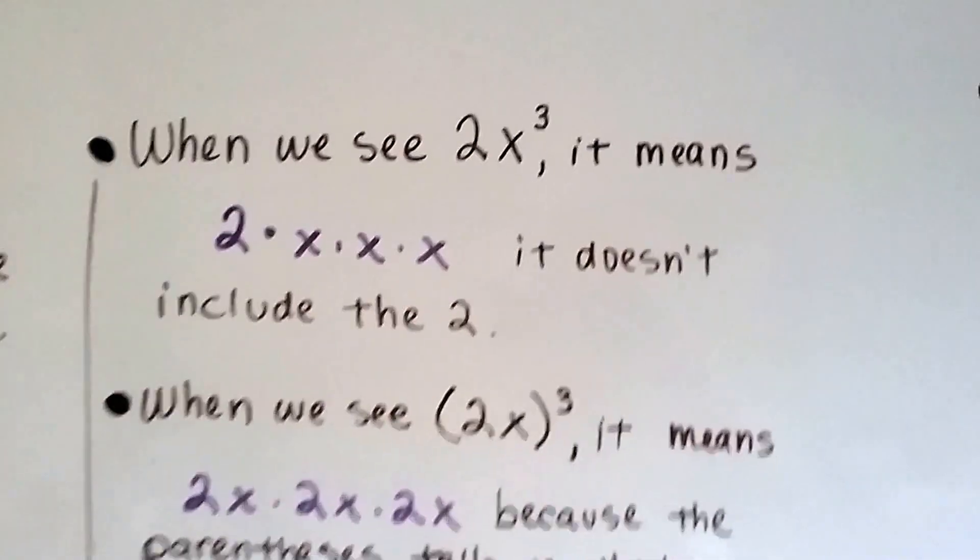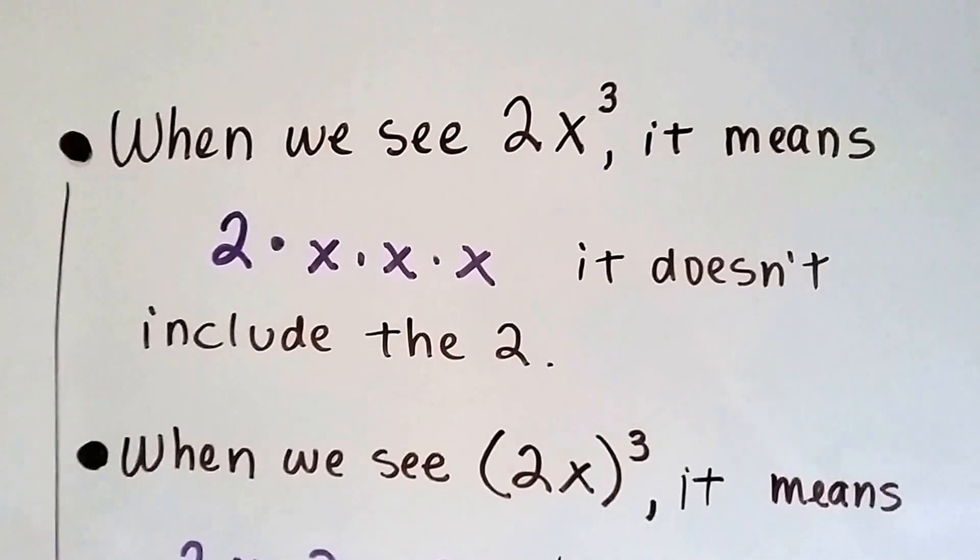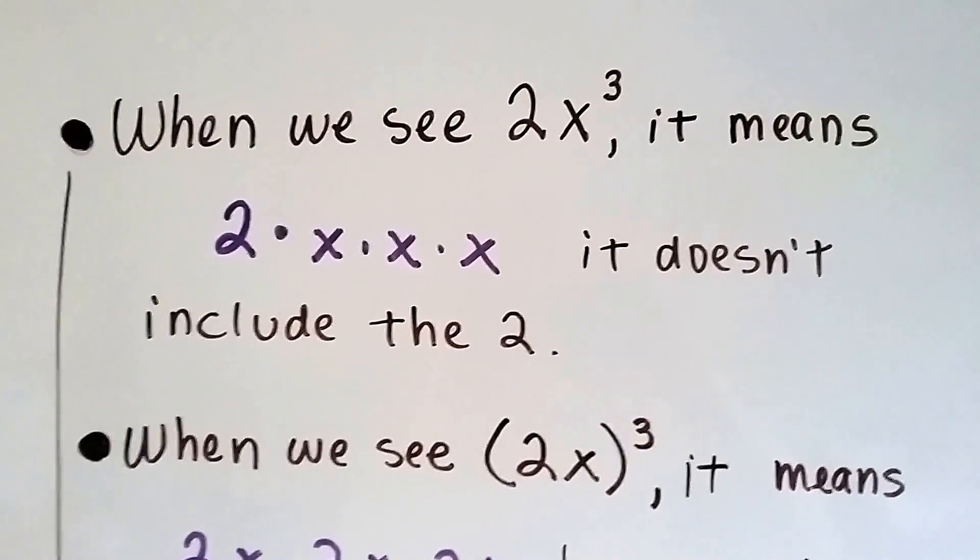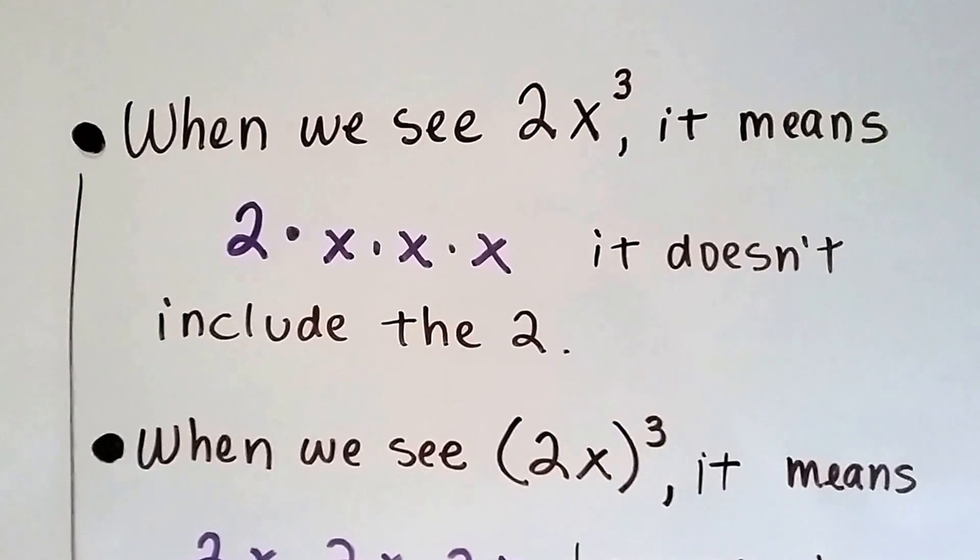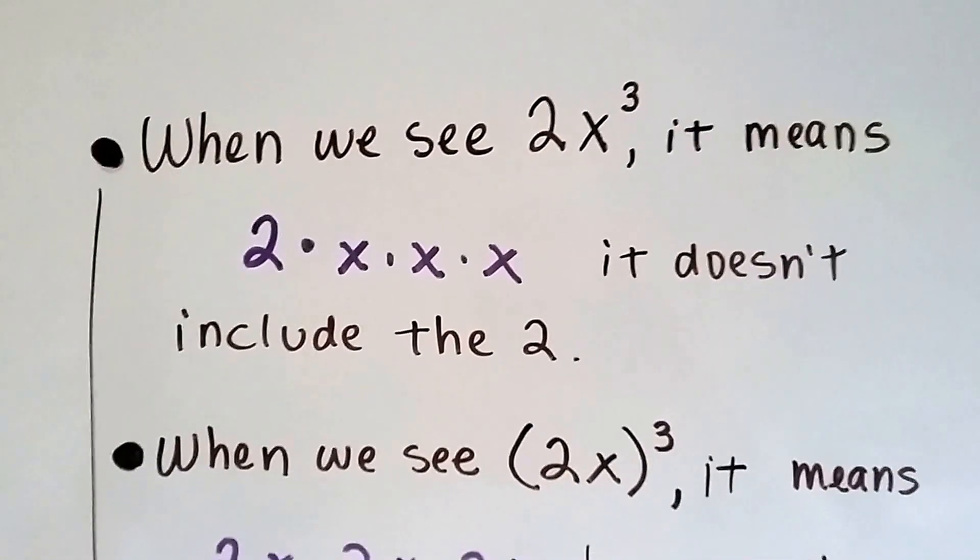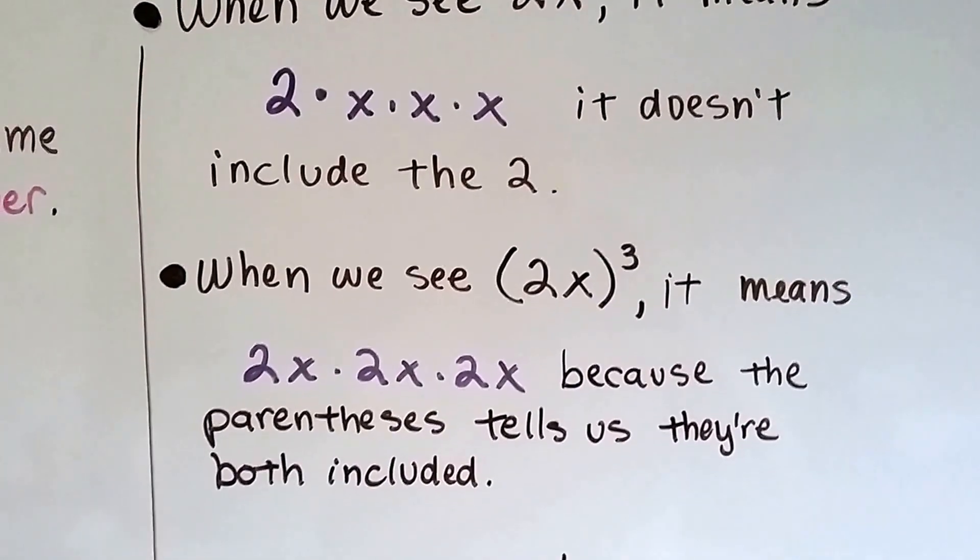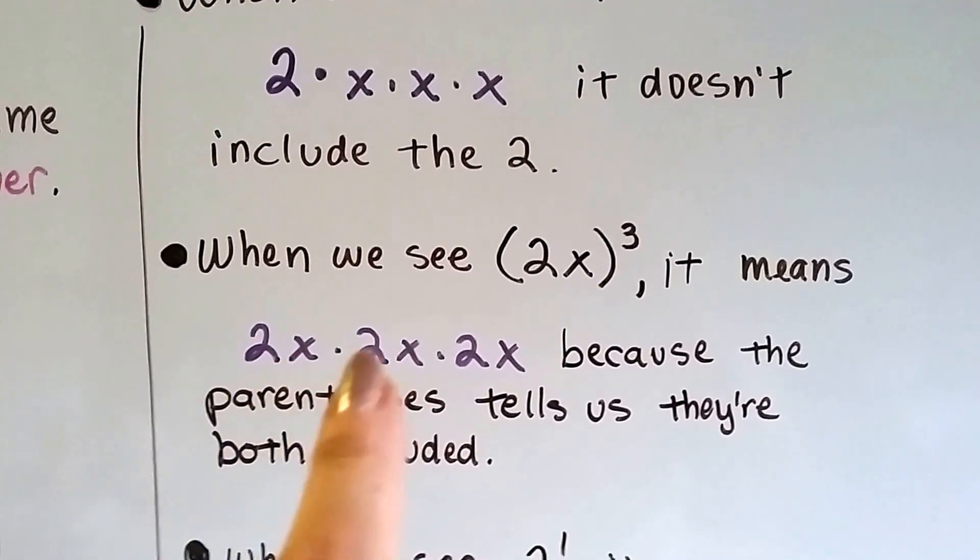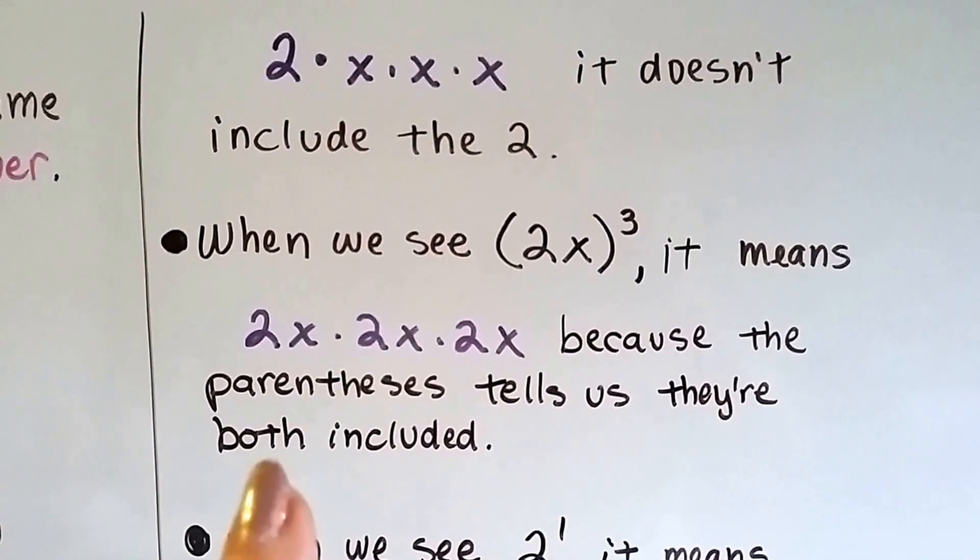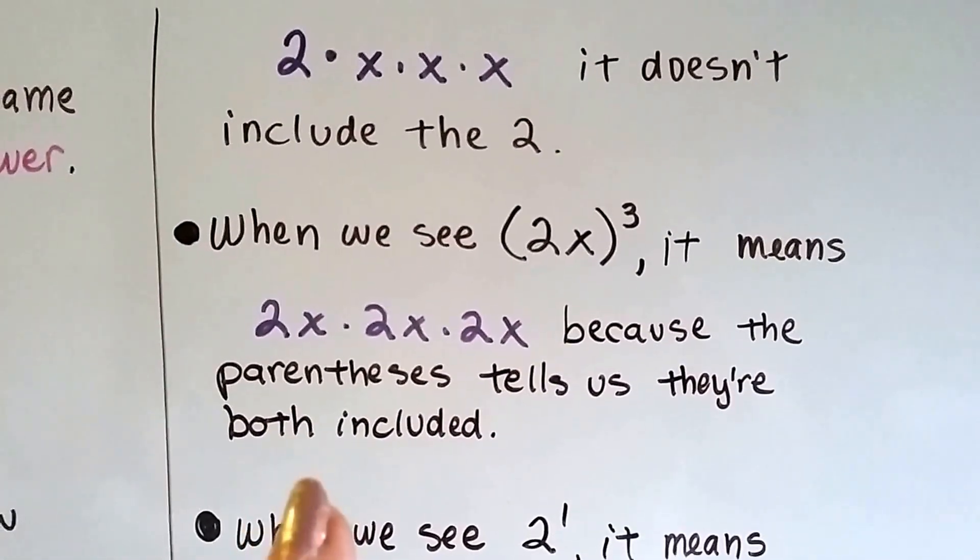When we see 2x cubed or 2x to the third power, it means 2 times x times x times x. It doesn't include the 2. When we see 2x in parentheses with the little 3 exponent on the outside, it means 2x times 2x times 2x because the parentheses tells us they're both included.